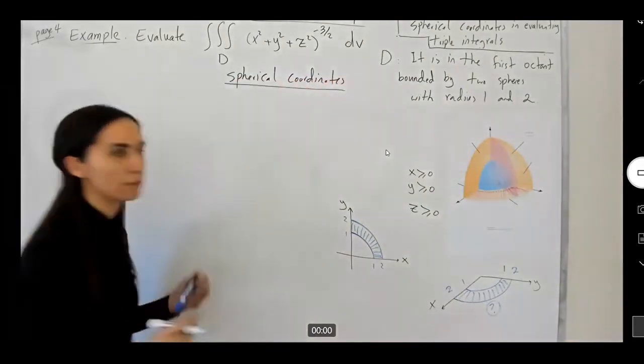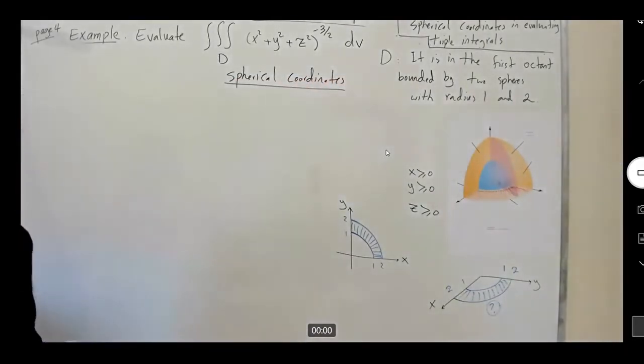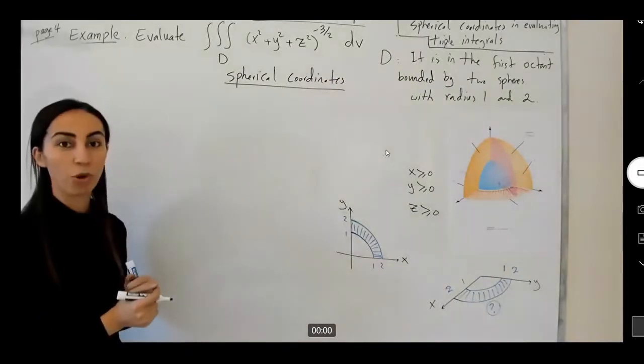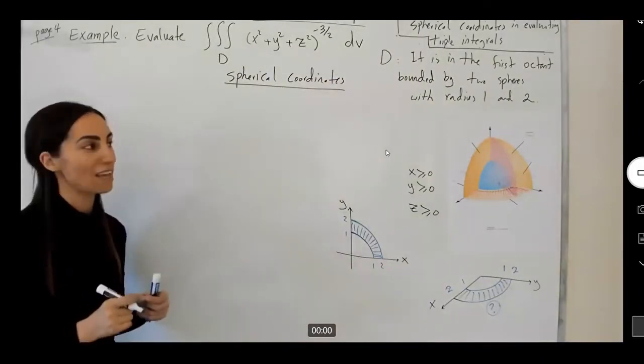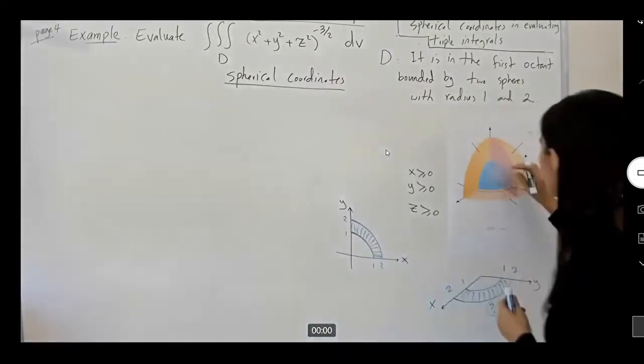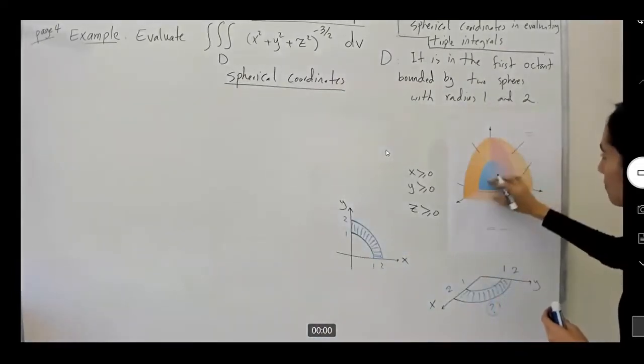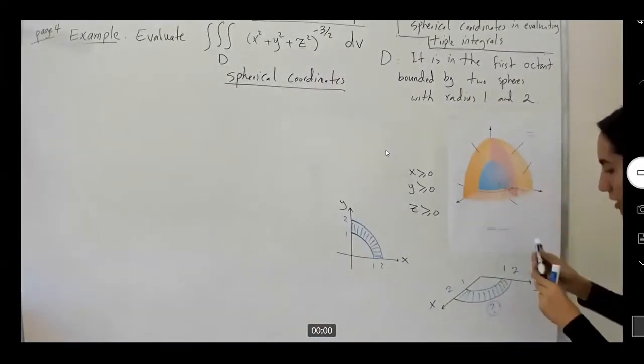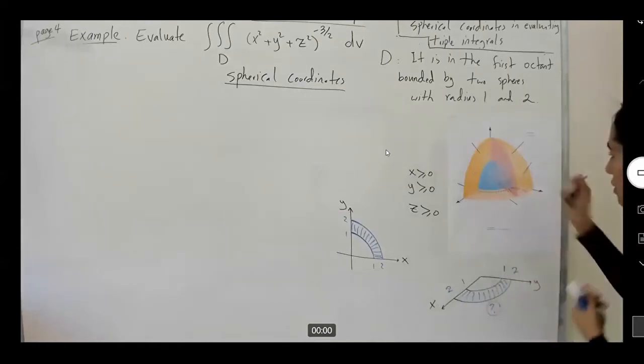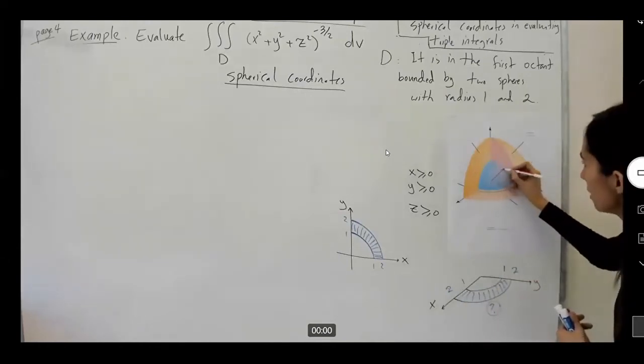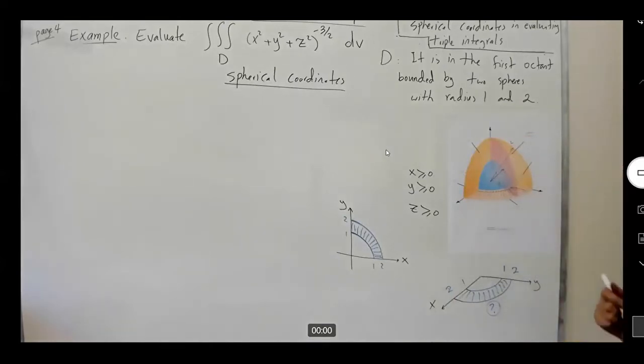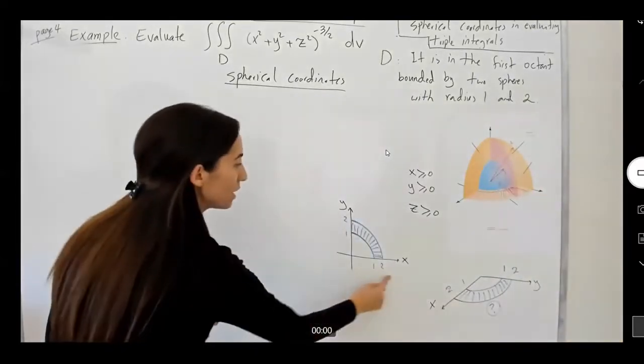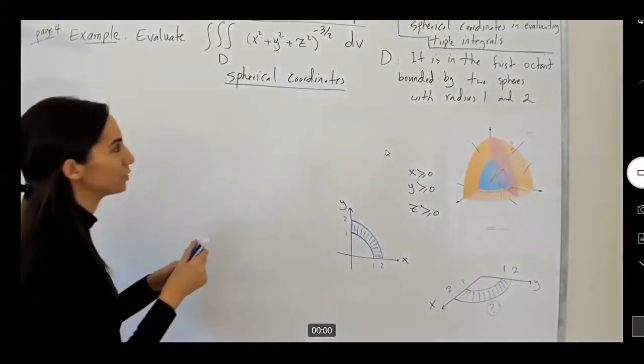In spherical coordinates, remember that you're using rho. Rho is the distance between the point and the origin. So the first distance, if you look at this, the first distance rho is one. Then your rho changes to two. So your rho is in between one and two.